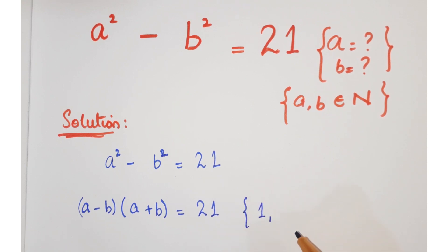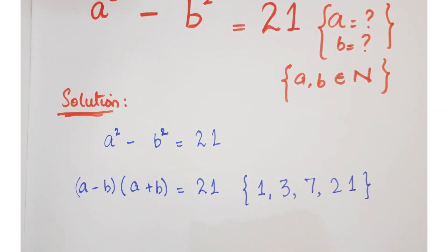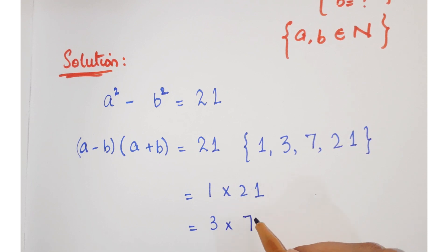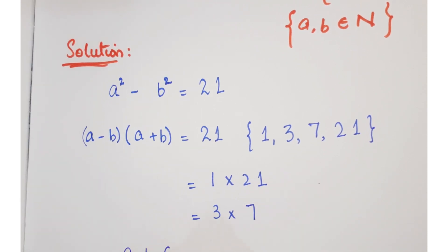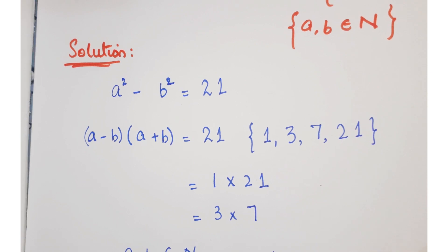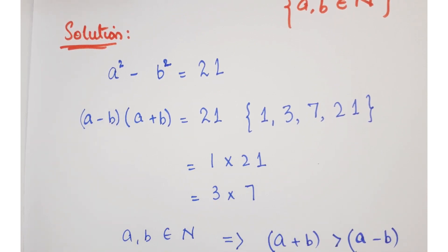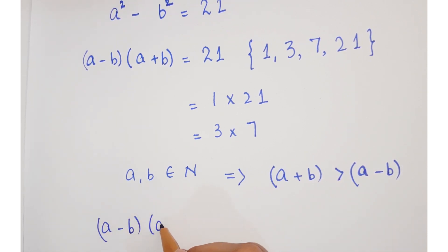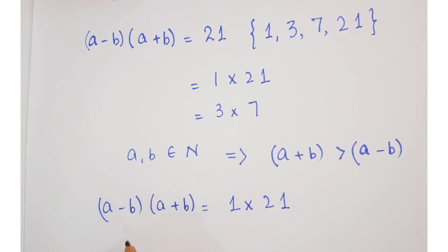The factors of 21 are 1, 3, 7, and 21. When you multiply 1 with 21, you get 21, and when you multiply 3 with 7, you also get 21. We have the condition that a and b belong to natural numbers. This implies that the sum of these two numbers, a plus b, is greater than a minus b. So we can say that a minus b into a plus b equals 1 into 21, since a plus b is greater than a minus b.